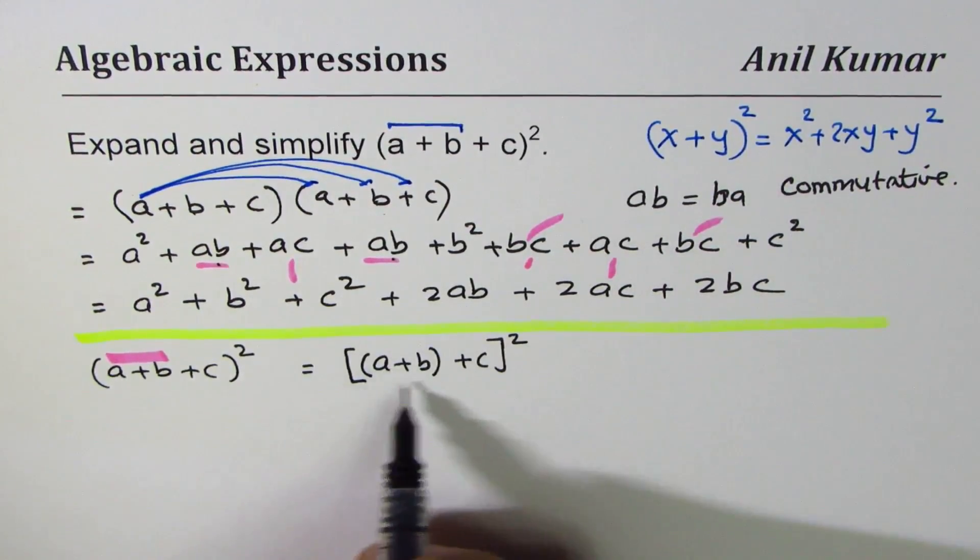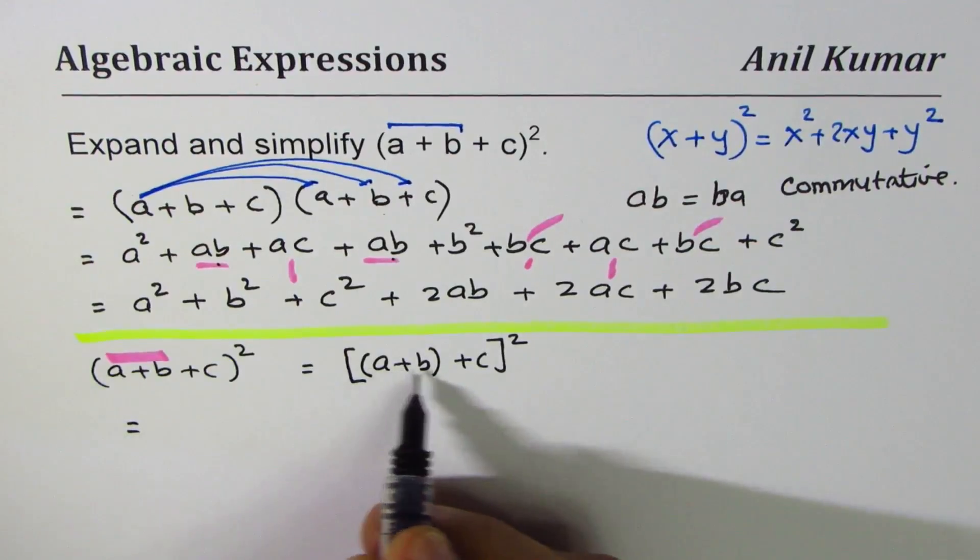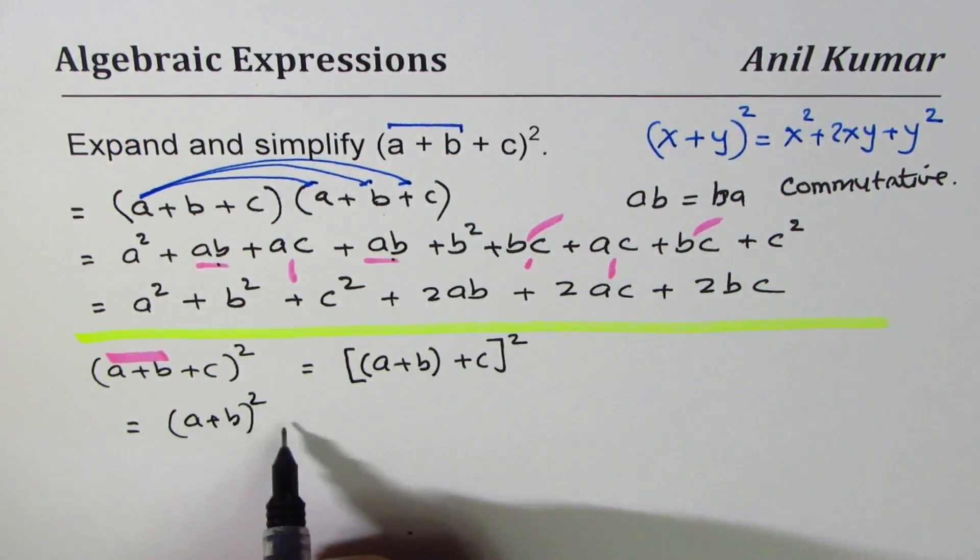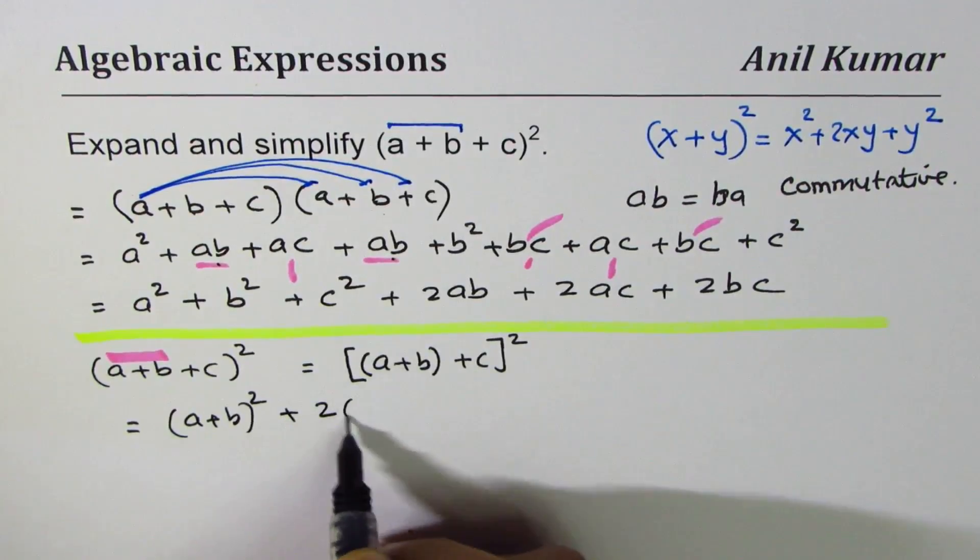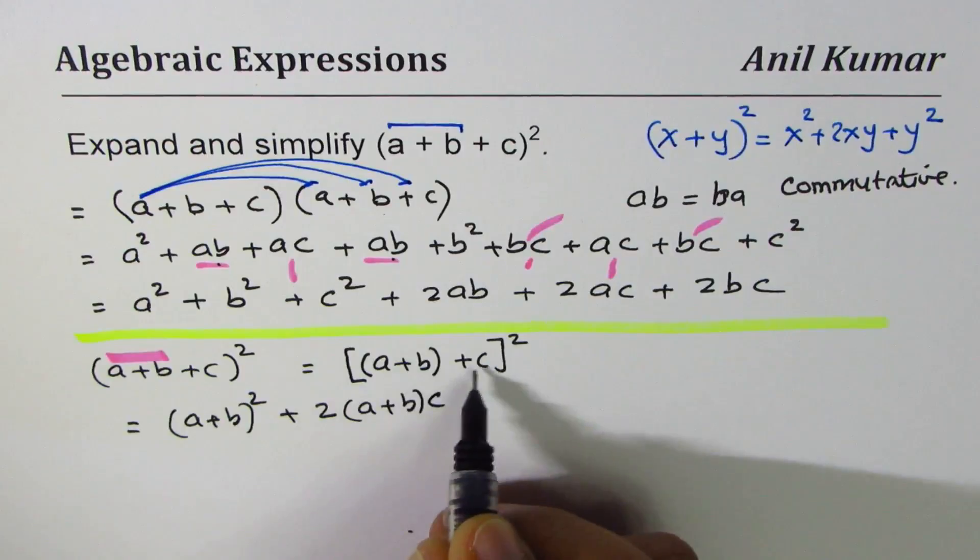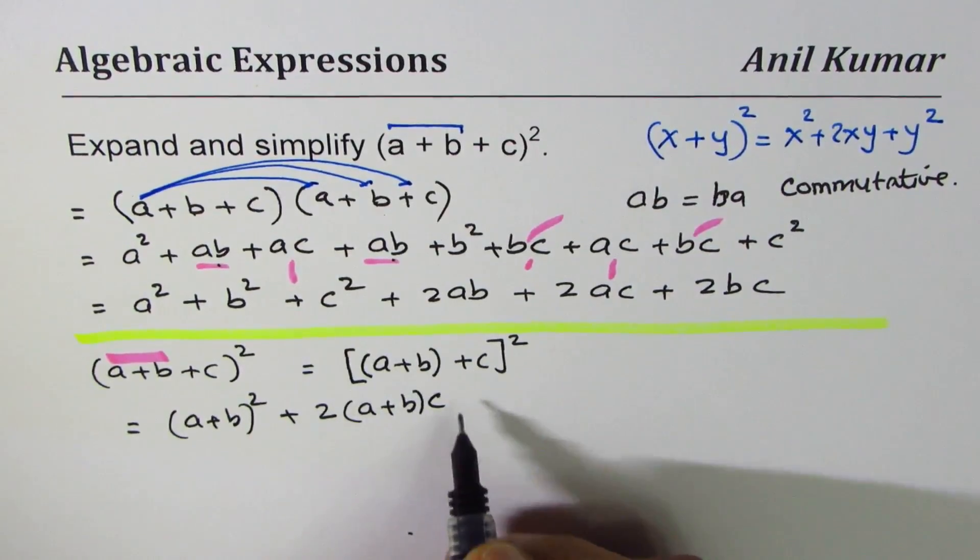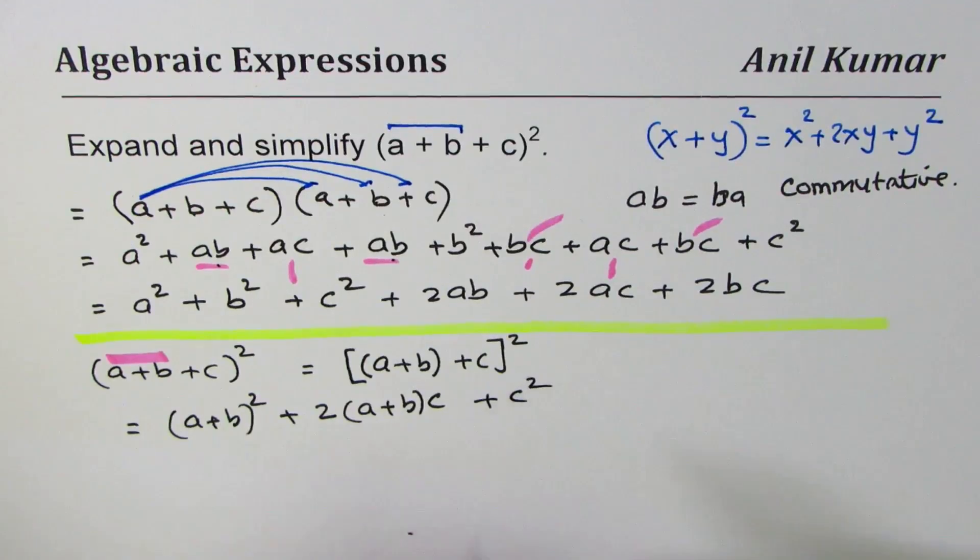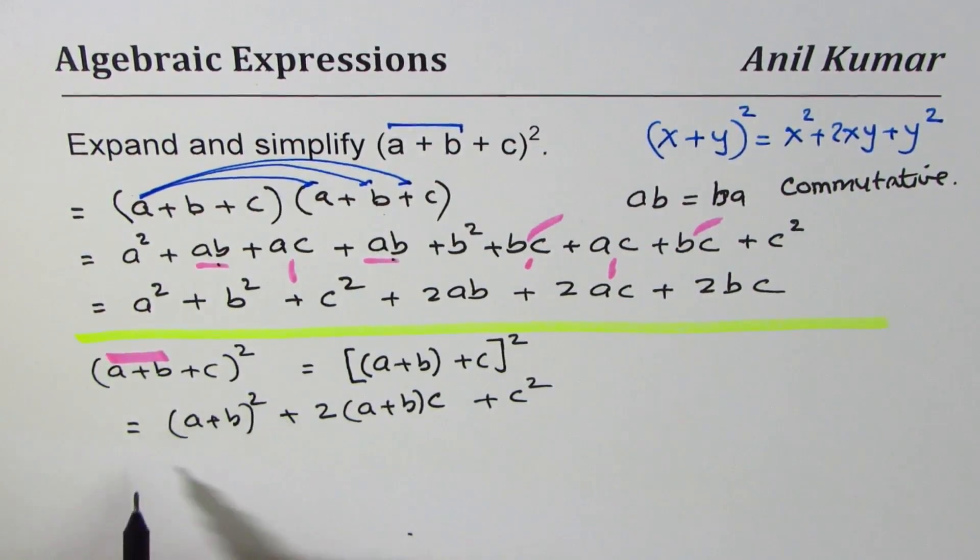And applying this formula x² + 2xy + y², so let me rewrite this: (a + b)², that is the first term, plus 2 times (a + b) times c, the product of these two twice, and then plus c².